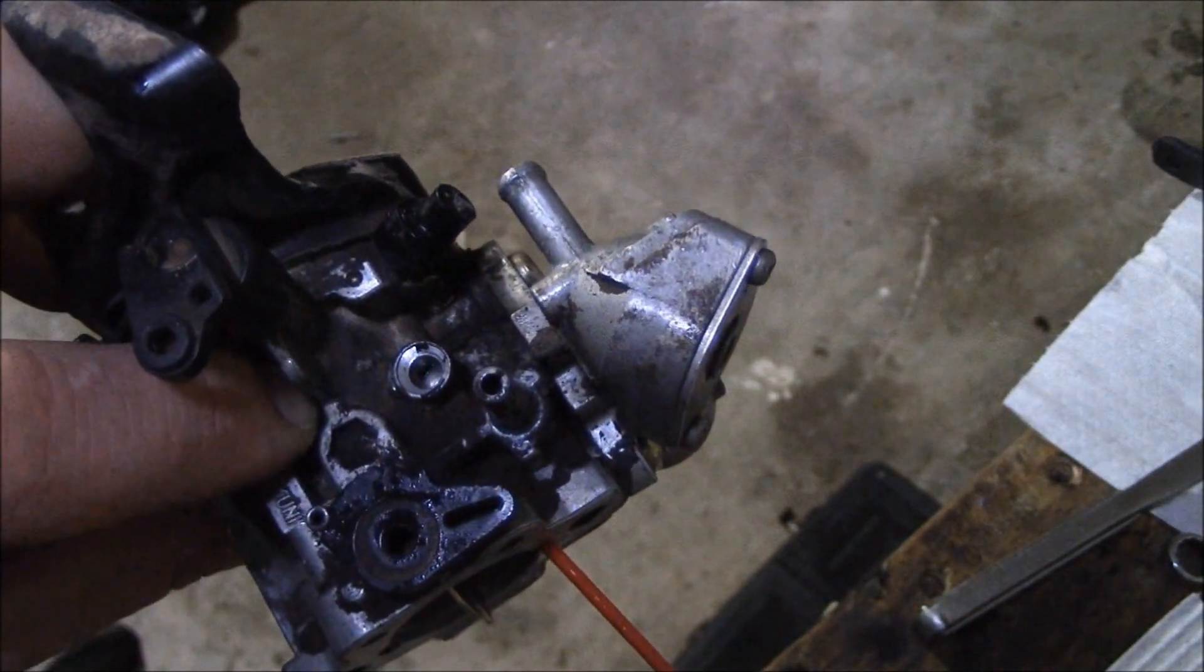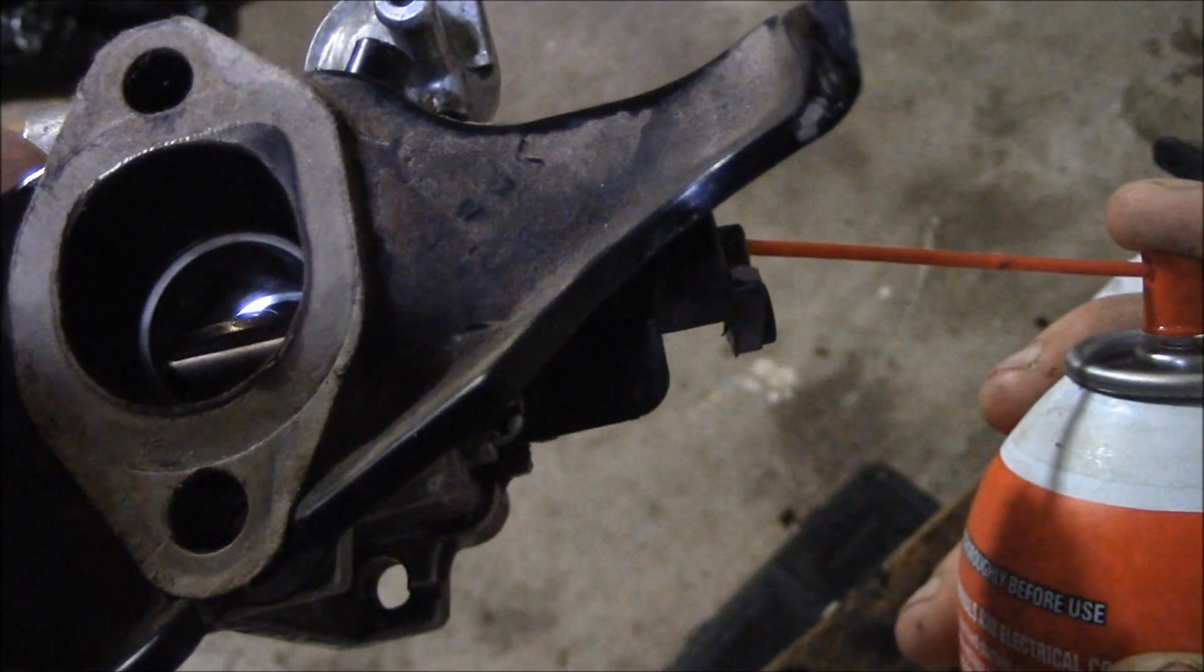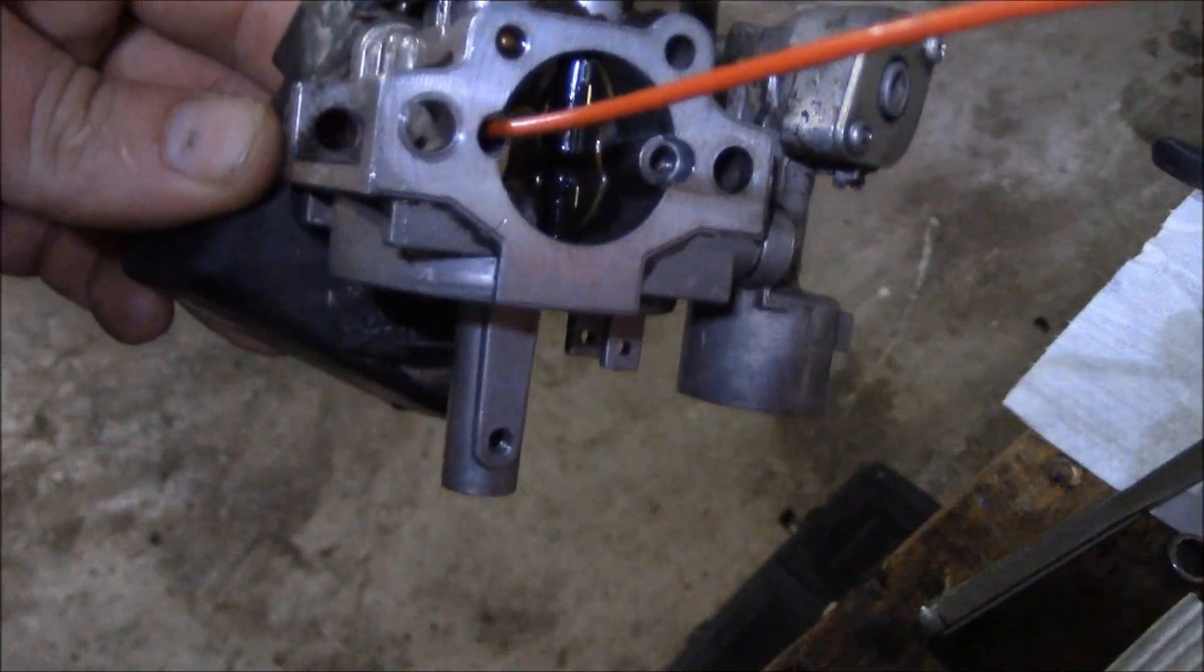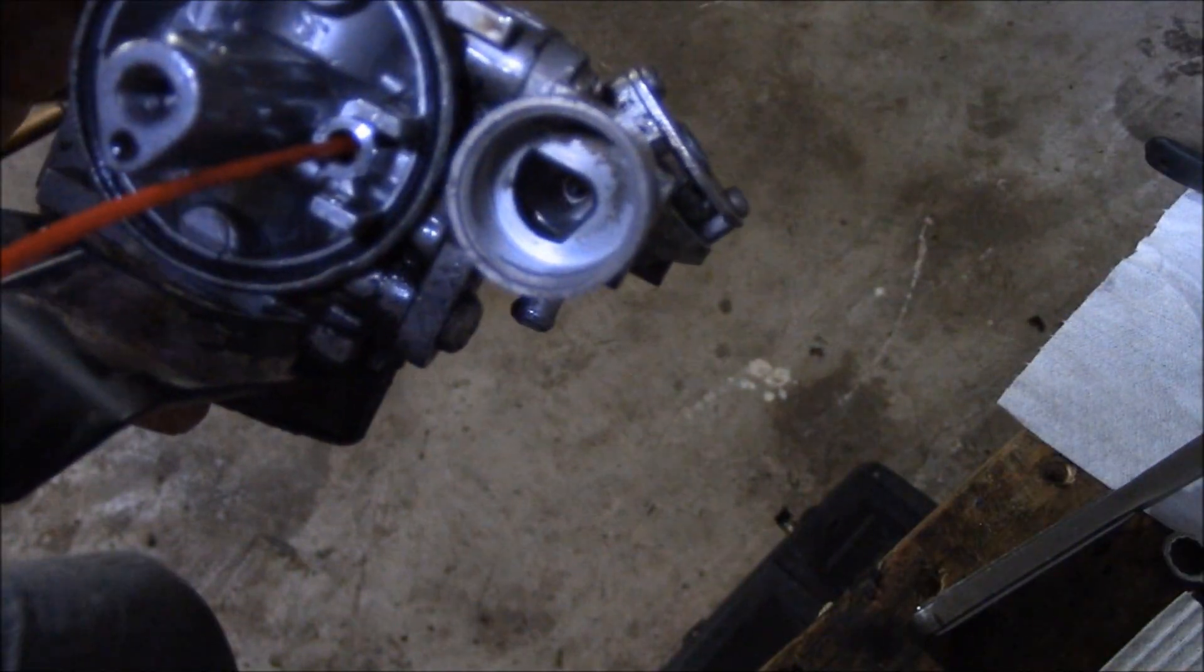So on to the next. You've got your idle pilot and air bleed jet, you've got your main air bleed jet, and the center pedestal, and just look where all the stuff is going.